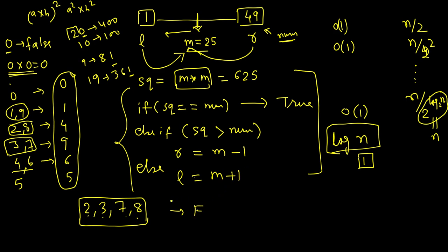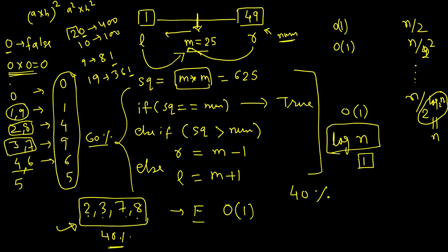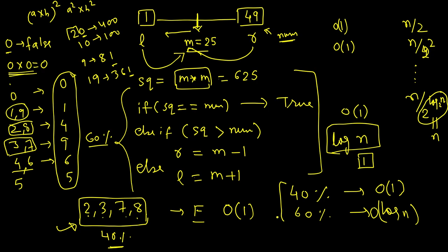If we have a huge number of test cases and they are evenly distributed, numbers ending in 2, 3, 7, or 8 account for 40% of cases, where we return false in O(1). For the remaining 60% we run the binary search in O(log n). Overall it's still O(log n), but this small optimization helps in practice.